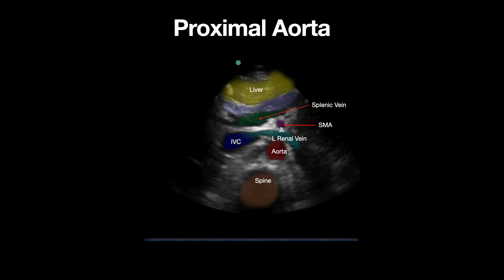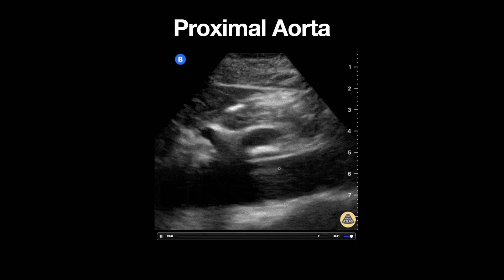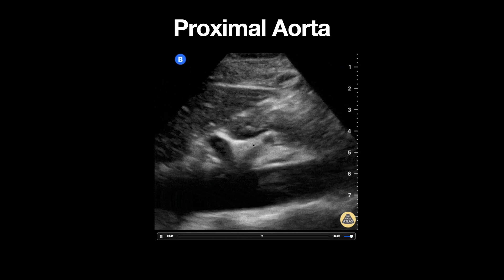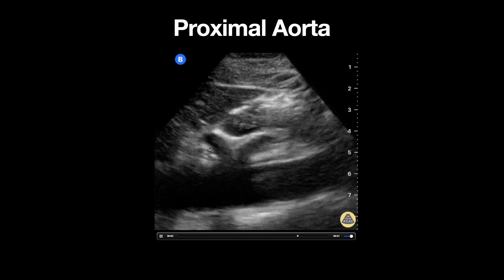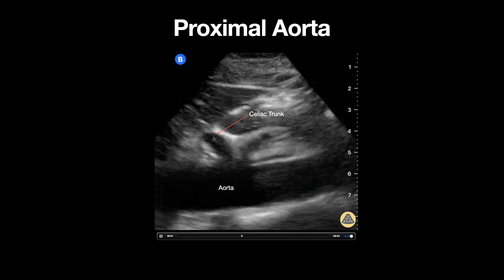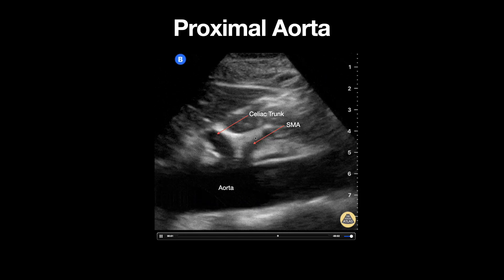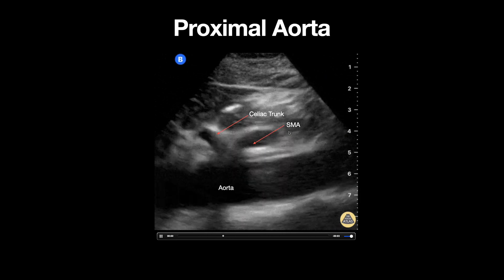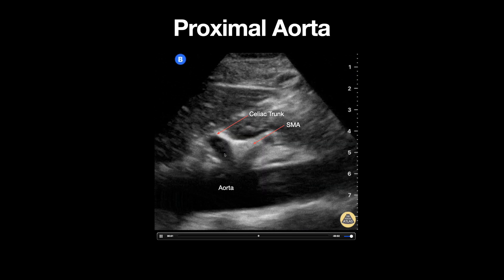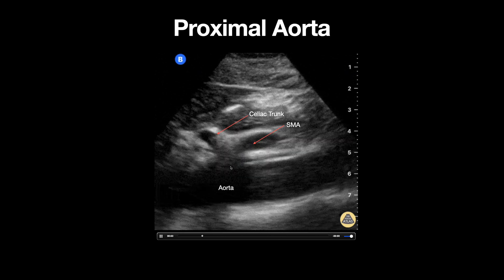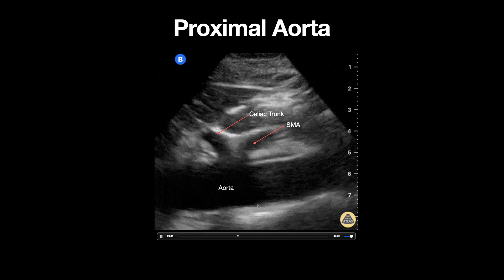Now, if we turn the probe 90 degrees and obtain a longitudinal orientation of the aorta, we can appreciate two tributaries seen coming off the aorta. The more proximal one will be our celiac trunk, and diving more down towards the feet will be our superior mesenteric artery. Always remember that when evaluating the aorta, we should evaluate in two planes — transverse and longitudinal — ensuring that the aorta is not greater than three centimeters.